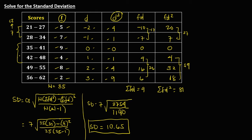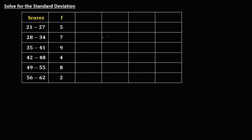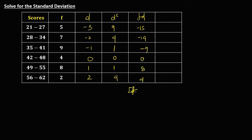What if we put 0 on a different class — would we get the same answer? Let's try placing 0 on the fourth class instead. Going up is negative, going down is positive. The D² values are 9, 4, 1, 0, 1, and 4. The FD values are negative 15, negative 14, negative 9, 0, 8, and 4. Summing FD: negative 38 plus positive 12 gives ΣFD = negative 26.